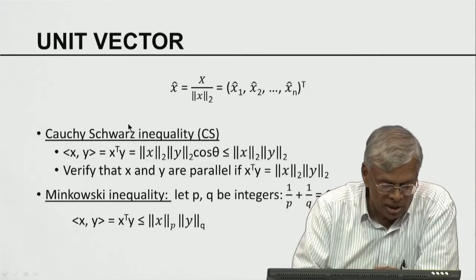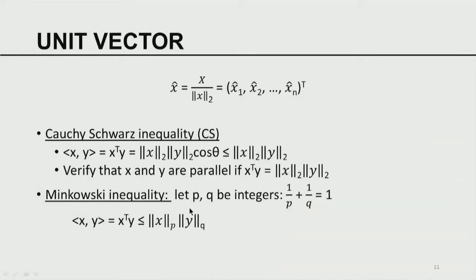An extension of the Cauchy-Schwarz inequality is the Minkowski inequality. If p and q are two integers with 1/p plus 1/q equals 1, then the inner product of x and y is less than or equal to the p-norm of x times the q-norm of y. When p equals q equals 2, since 1/2 plus 1/2 equals 1, the Minkowski inequality reduces to the Cauchy-Schwarz inequality. This shows the generalization between 2-norm, p-norm, q-norm, Cauchy-Schwarz, and Minkowski.